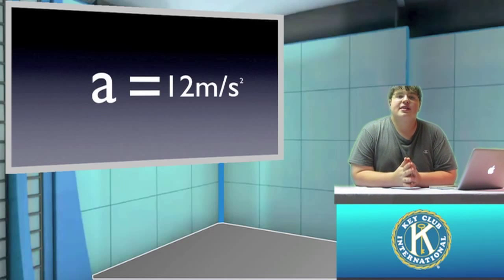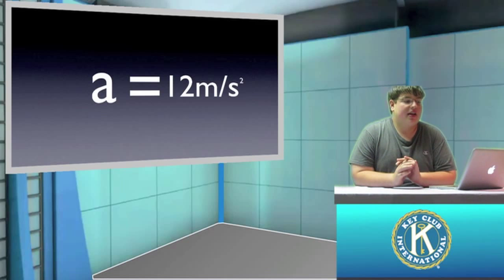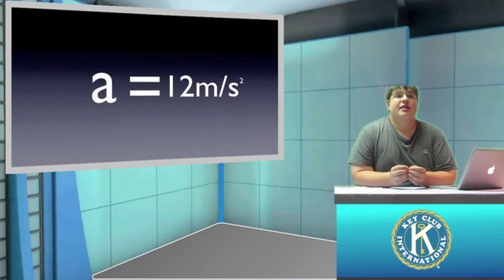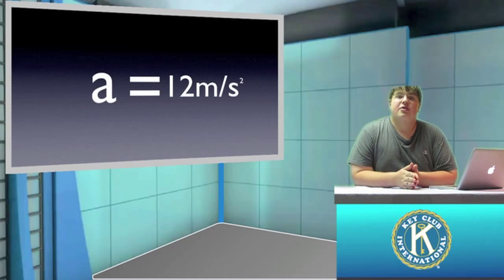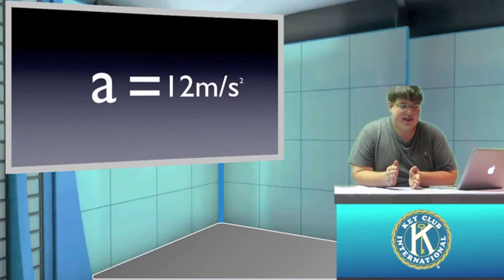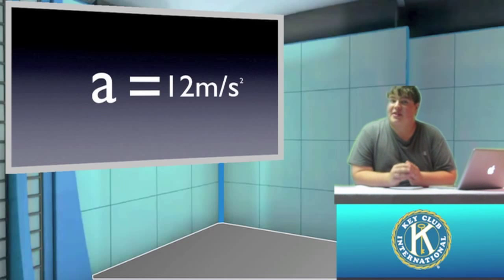So what does this 12 meters per second squared really mean? Basically, if no time had elapsed — if we allowed that dragster to accelerate for 0 seconds — that dragster would be moving 0 meters per second. But if we allow the dragster to accelerate for 1 second, then at that 1 second the dragster would be moving 12 meters per second.